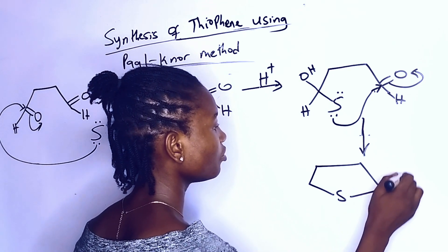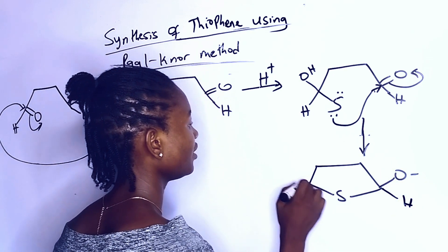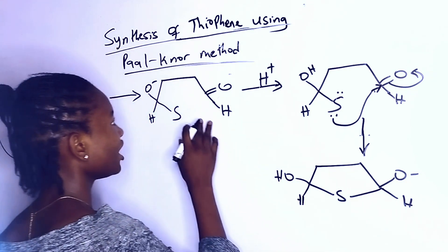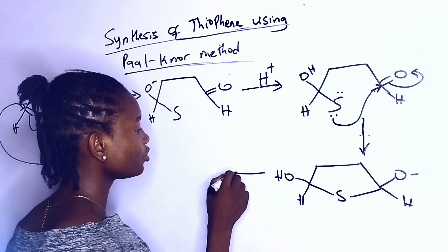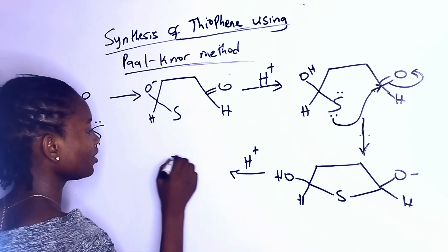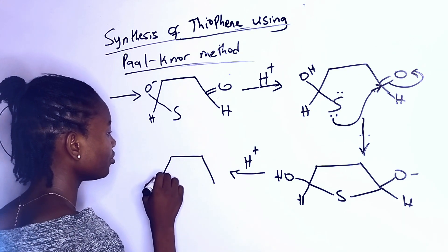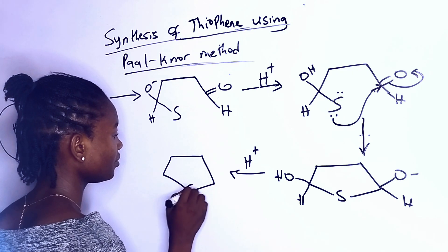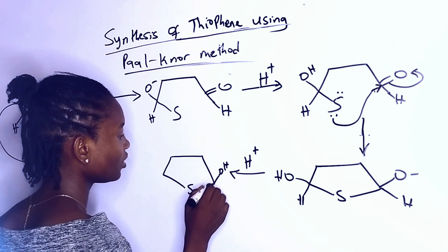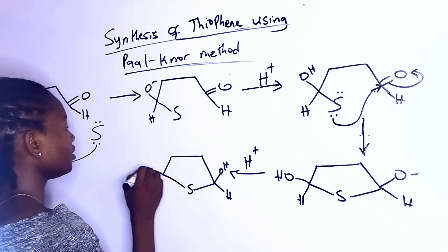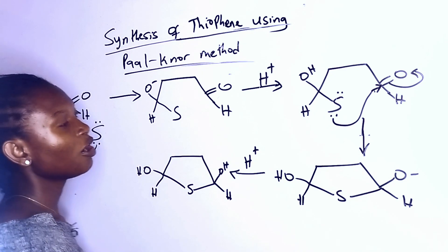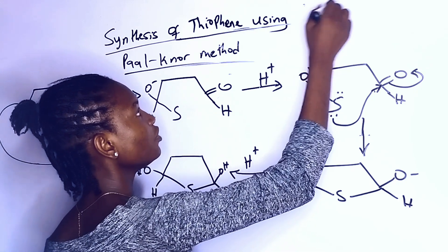This one will become oxygen minus, and we have an H. The same thing as we did before — we are also going to protonate. It is going to give us a compound with OH and H on both ends.